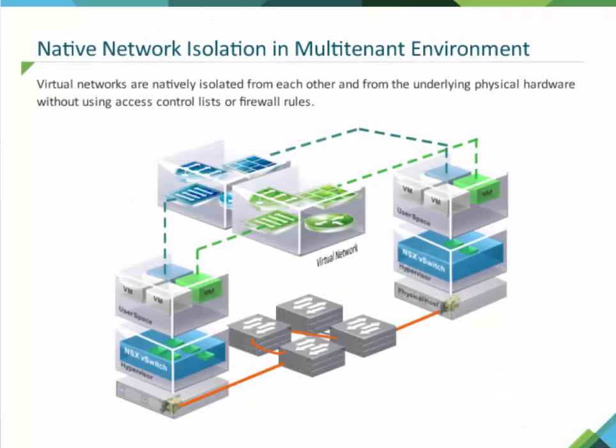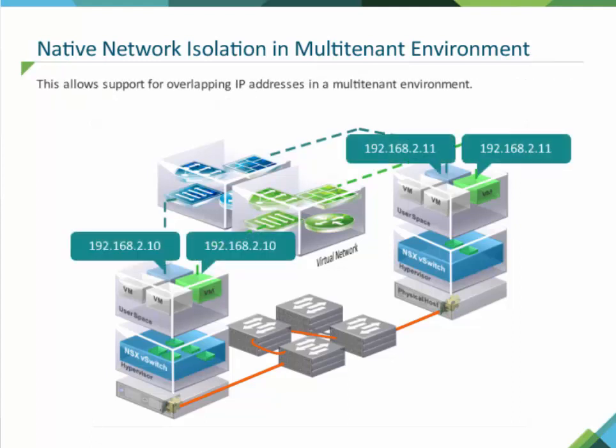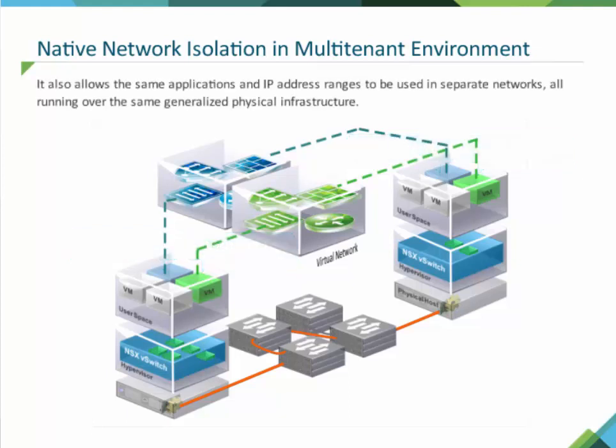Virtual networks are natively isolated from each other and from the underlying physical hardware without using access control lists or firewall rules. This allows support for overlapping IP addresses in a multi-tenant environment. It also allows the same applications and IP address ranges to be used in separate networks such as development, test, and production networks, all running over the same generalized physical infrastructure.